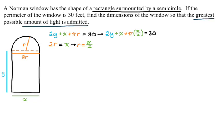So I can use that to simplify this. I get 2y + x + π(x/2) = 30. Now let's see what we need to actually do in the problem. We're looking for the greatest amount of light. So I want to maximize, as I said before, the maximum area. The area is going to be xy, and then half of the circle. A circle is πr² for the area, so I need πr² divided by 2.